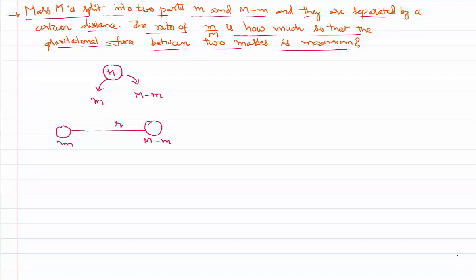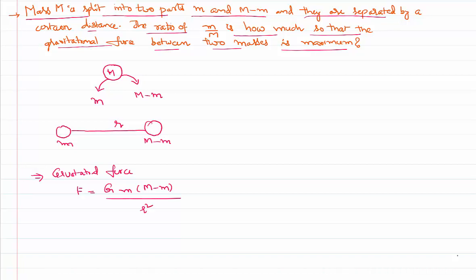These are the two different masses, which means there is a gravitational force between them. We know, according to Newton's law of gravitational force, F equals G times M1 times M2 divided by r squared.